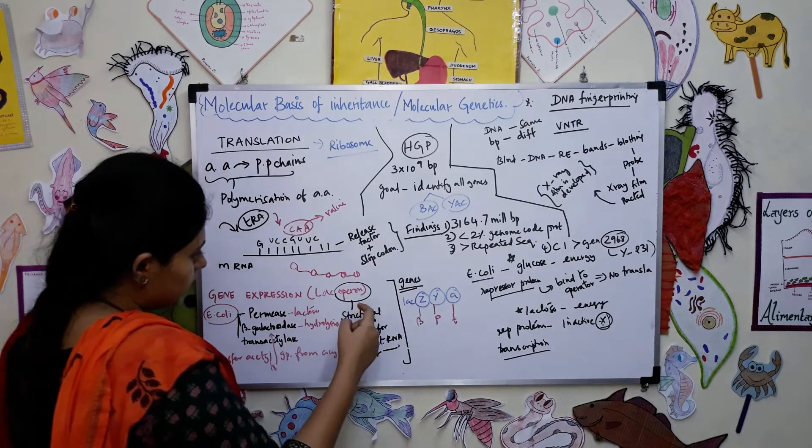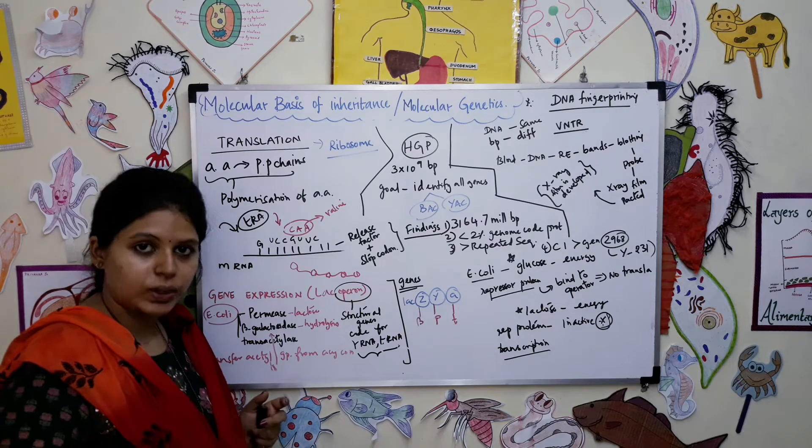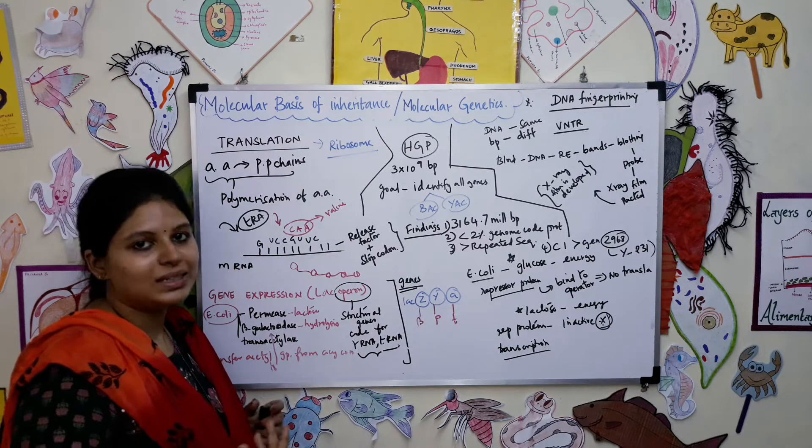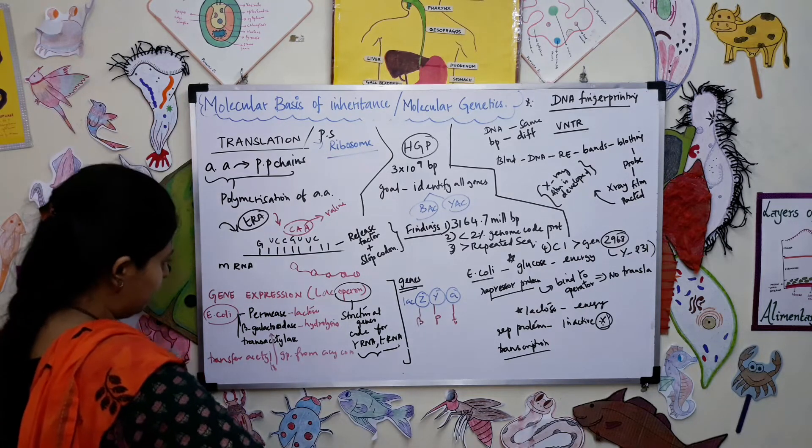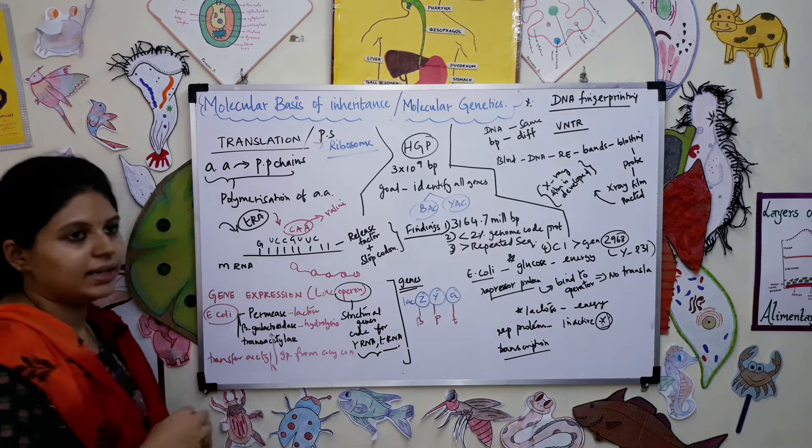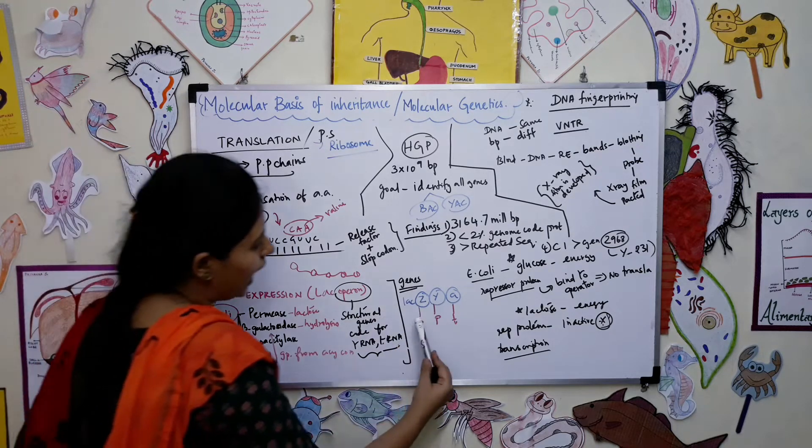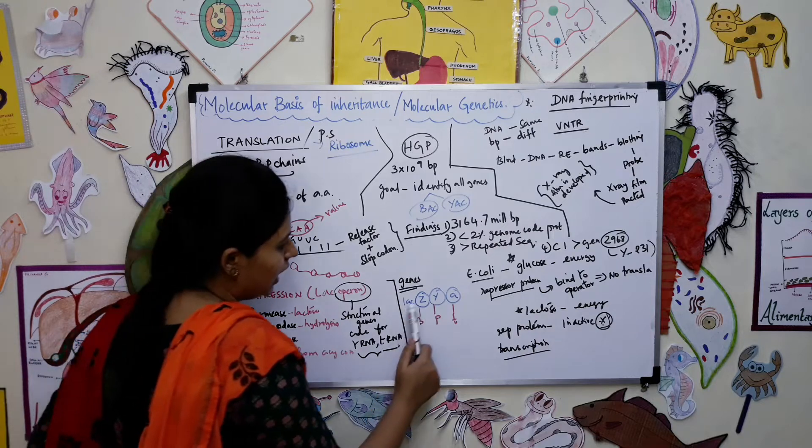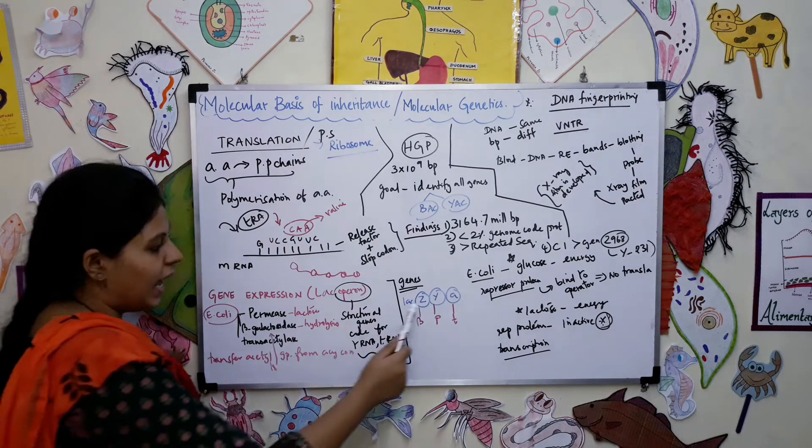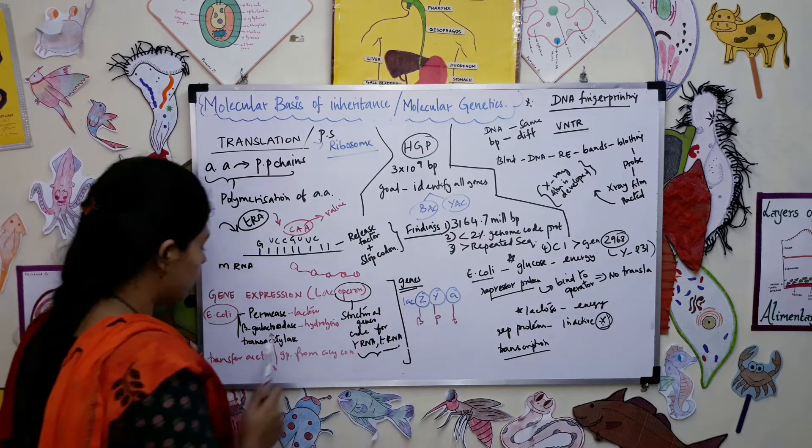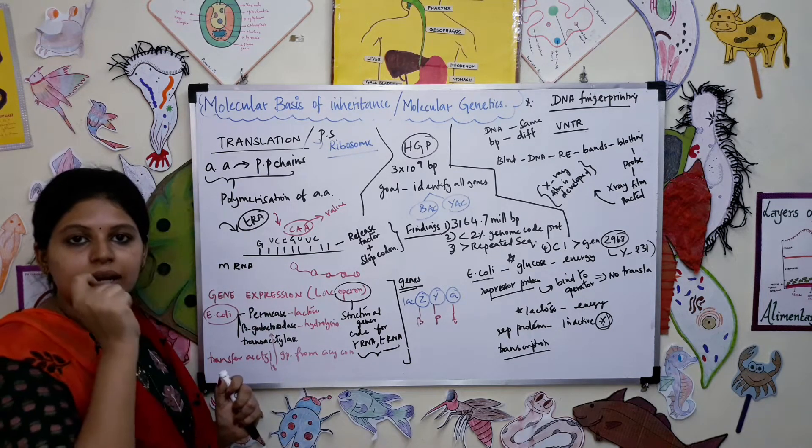A typical example for this gene expression is lac operon. Lac stands for lactose and operon stands for the structural gene which code for RNA and tRNA. This rRNA and tRNA will eventually help in the formation of amino acid which is protein synthesis. We will take an example of E. coli, Escherichia coli. This E. coli has three important genes: lac Z gene, lac Y gene, and lac A gene. Lac Z gene will code for beta-galactosidase, Y will code for permease, and A will code for transacetylase.